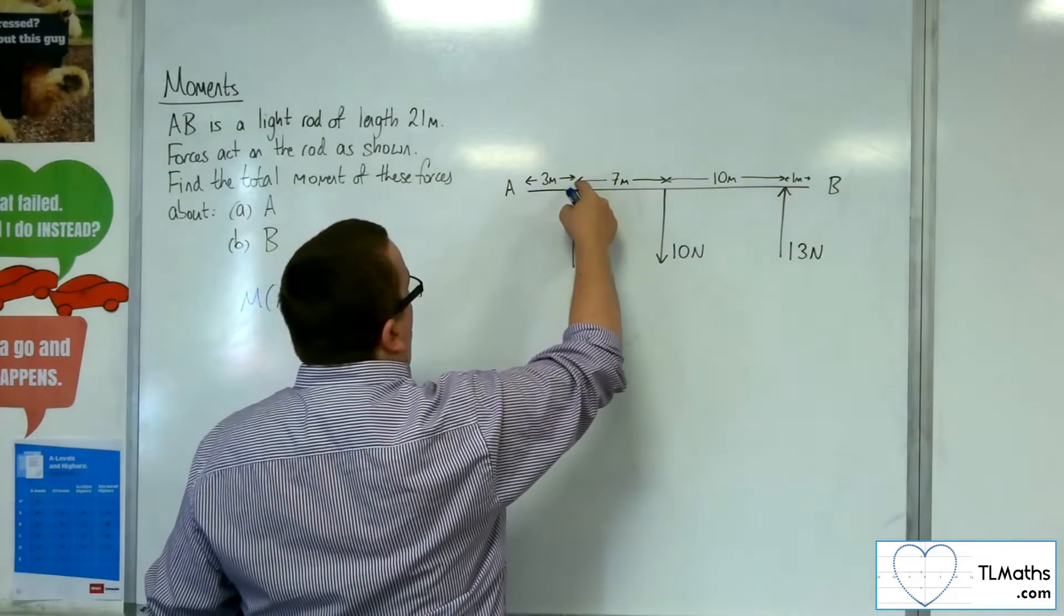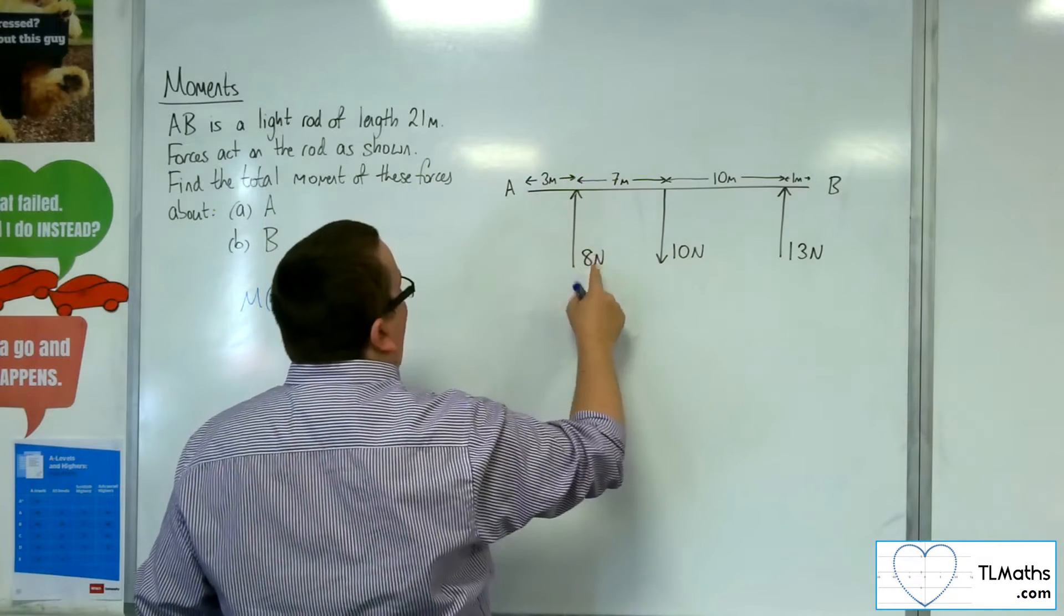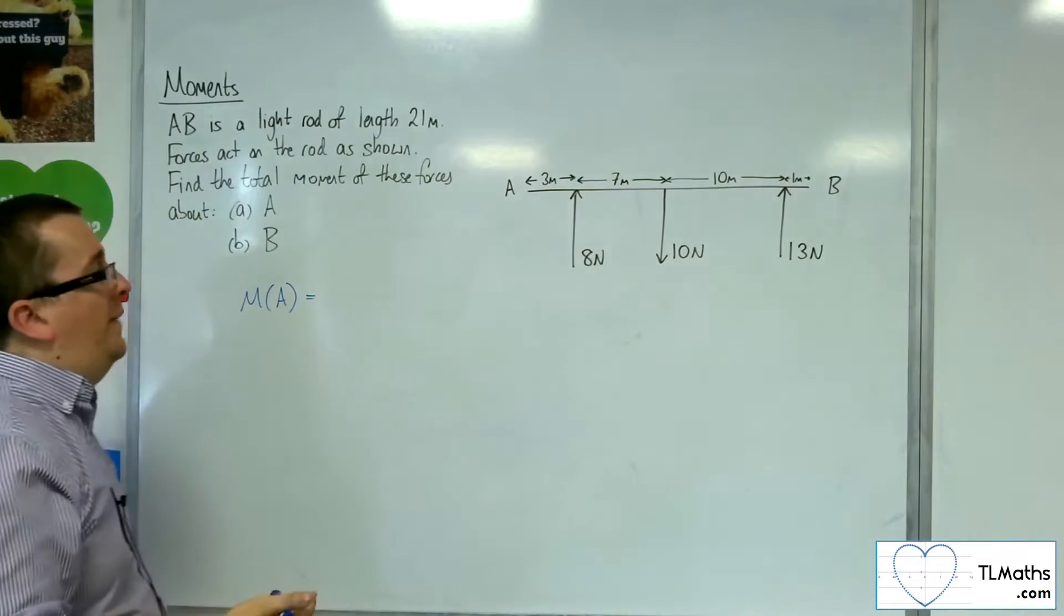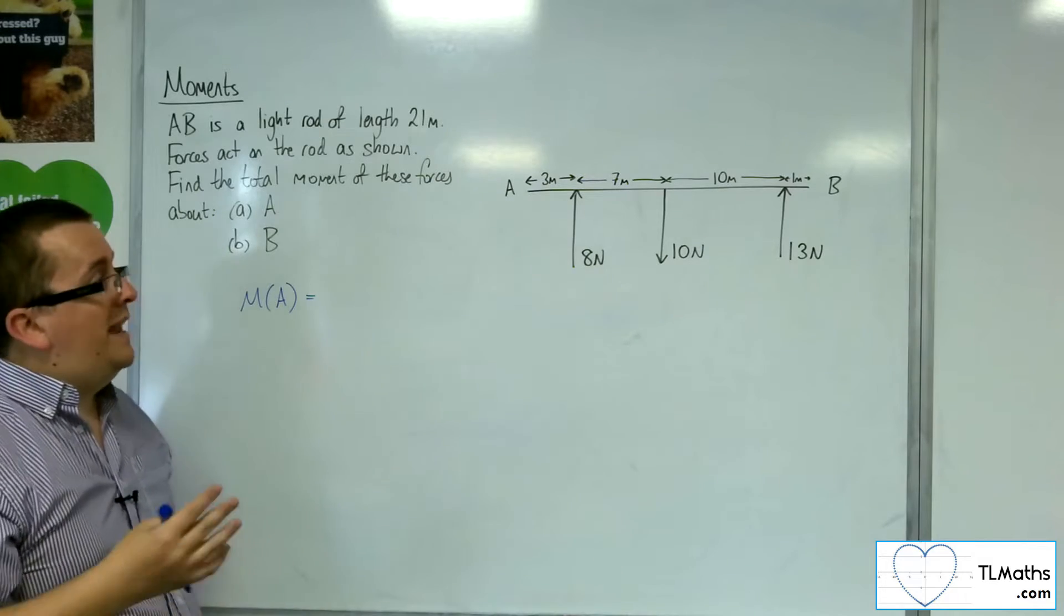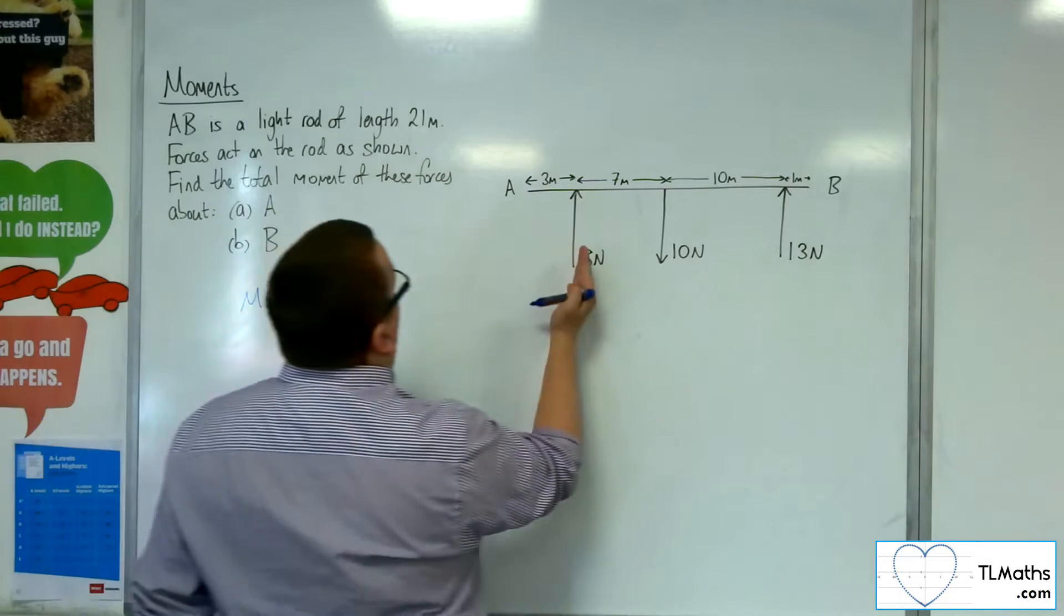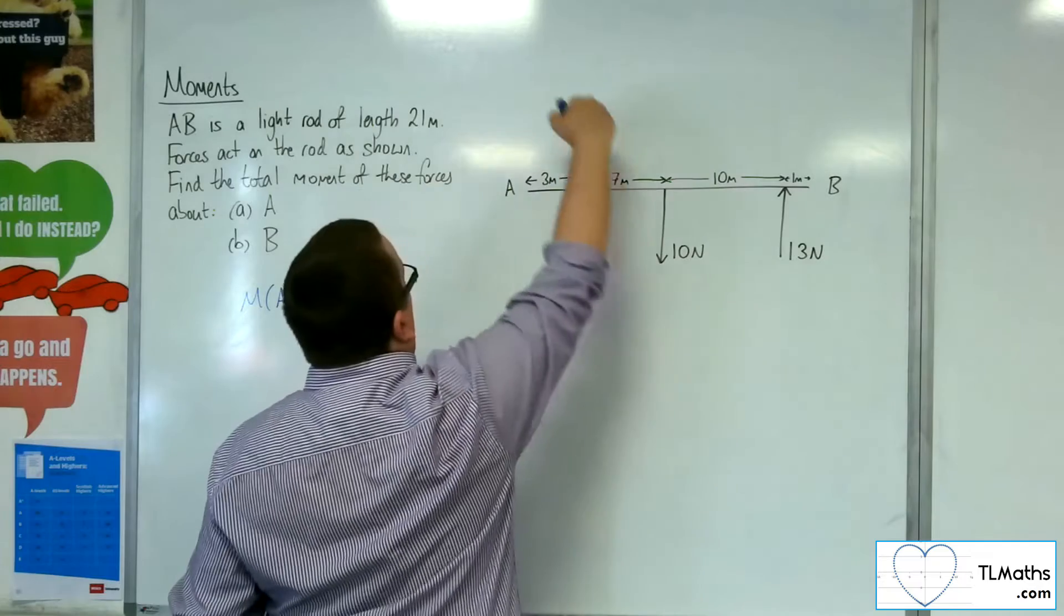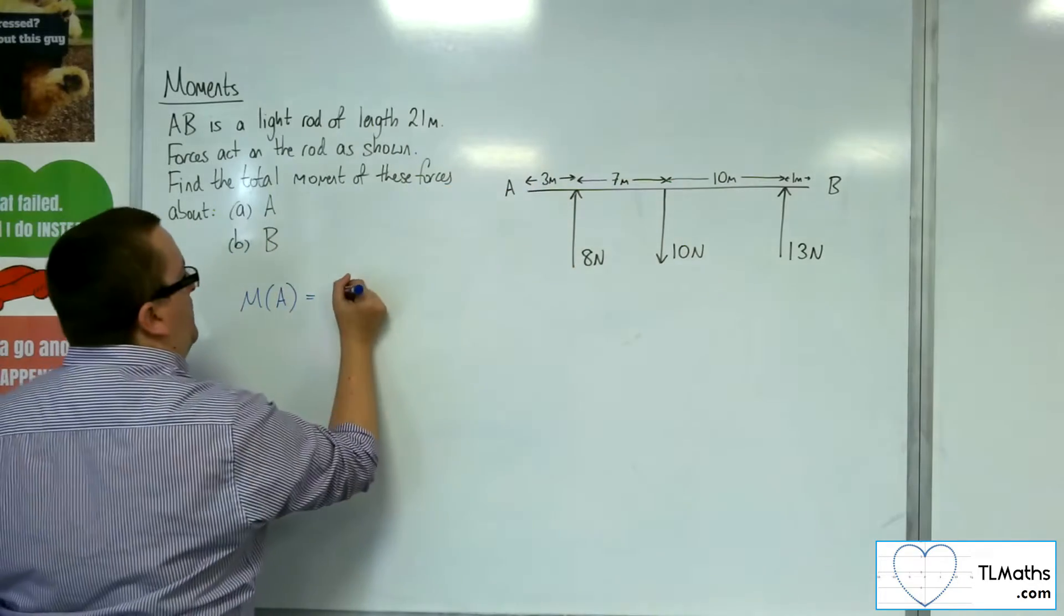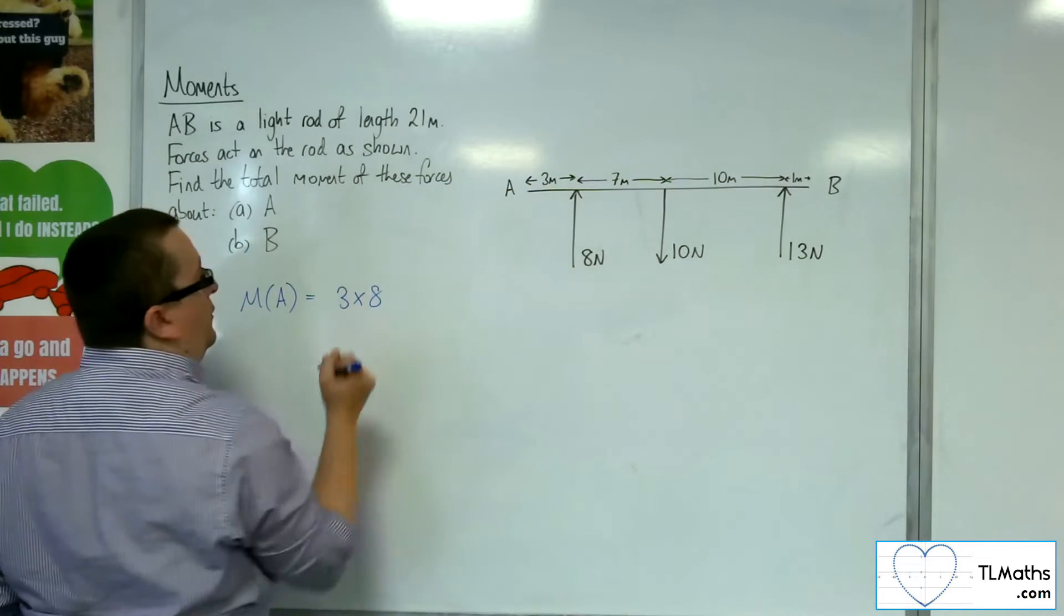So here we're 3 meters away from this force, the force is a value of 8 newtons, and so 3 lots of 8 is what I need to do to get the moment. And it is going in an anti-clockwise direction, and so that would be positive. So we've got 3 lots of 8.